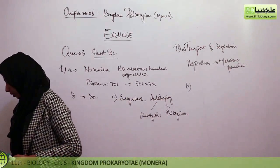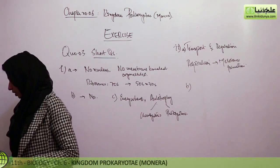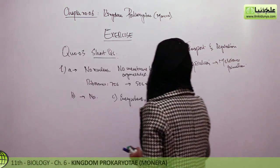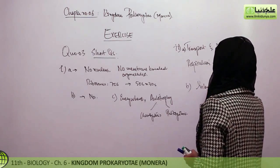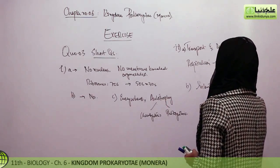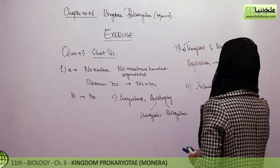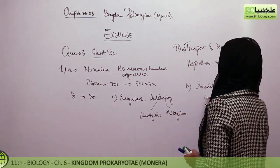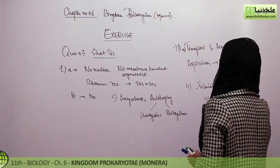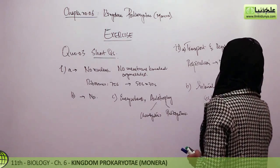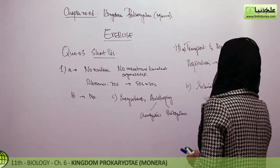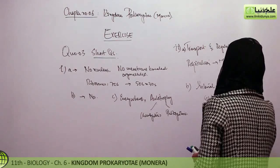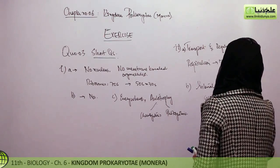Part B asks: what are mesosomes and some of their possible functions? Mesosomes are internal invaginations of the cell membrane. Their functions include roles in respiration and DNA replication.